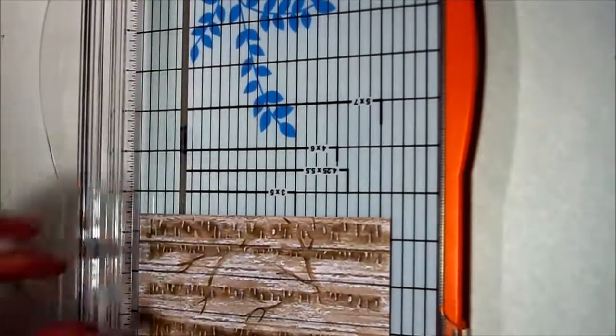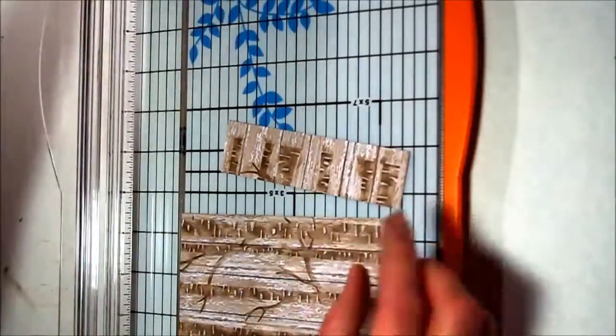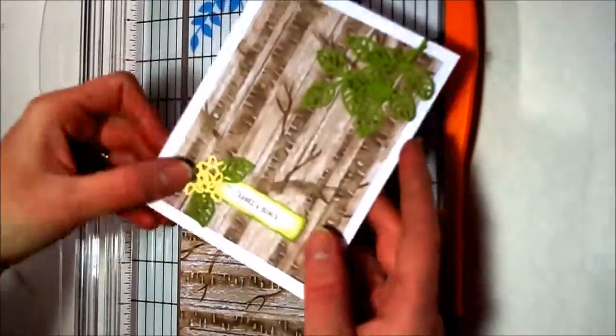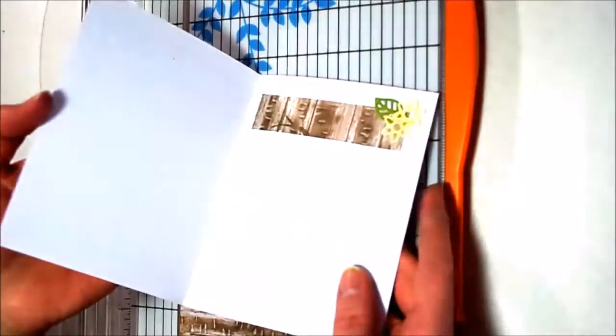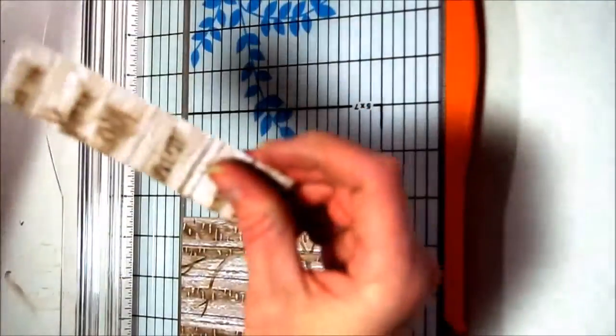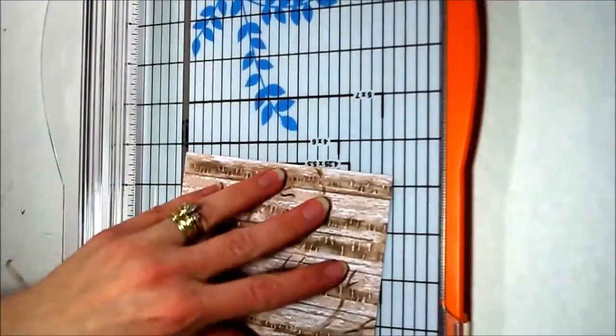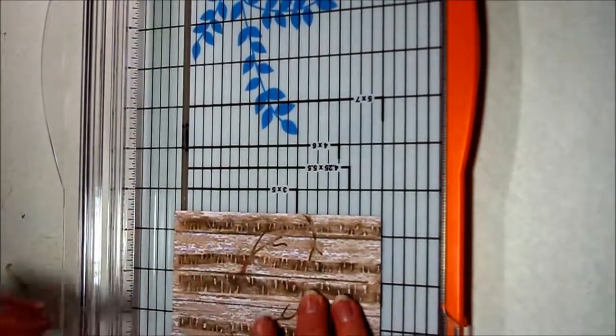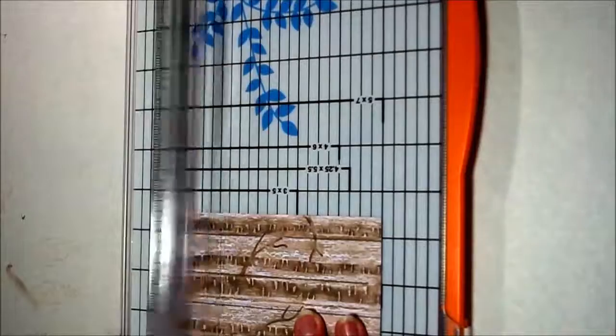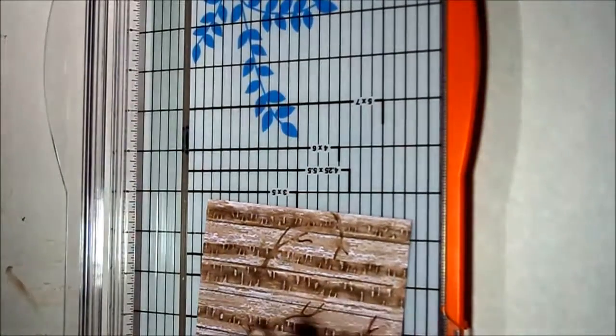And then this extra piece up here, we are going to use later on the inside. So just put it off the side, we'll get back to that. And then here we're going to flip this around and go to 5 exactly. Cut that off, we're done with that piece, throw that one away.